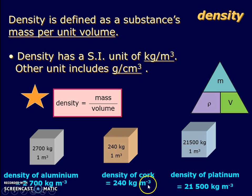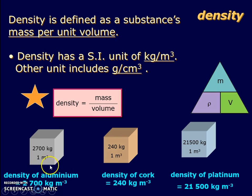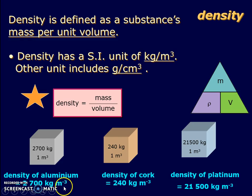These examples show that for different materials, there will be a different density value. If I have an aluminum block and cut it into smaller pieces, the density will still remain the same value, because when the block is smaller, mass changes and volume also changes accordingly. So the ratio of mass per unit volume still remains the same. Every material has a unique density.